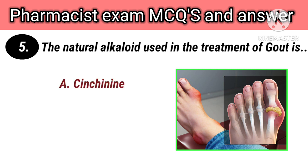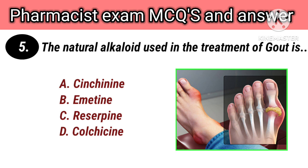The natural alkaloid used in the treatment of gout is options: A. Strychnine, B. Emetine, C. Reserpine, D. Colchicine. Right answer is D. Colchicine.